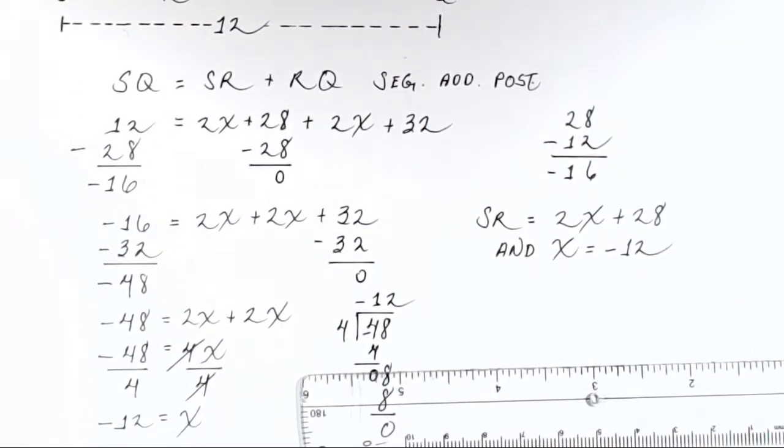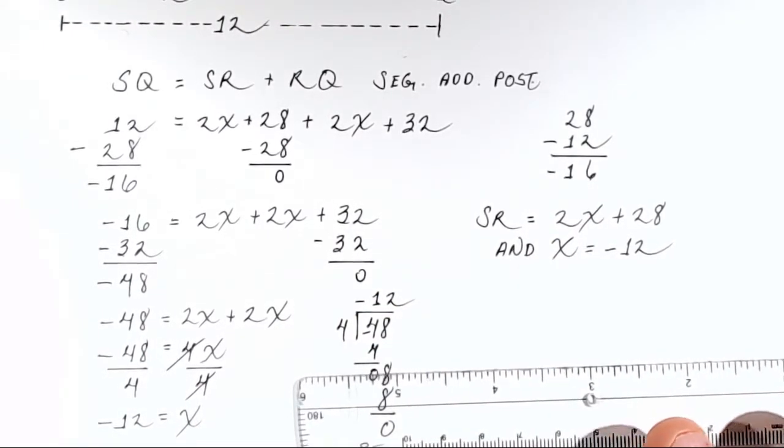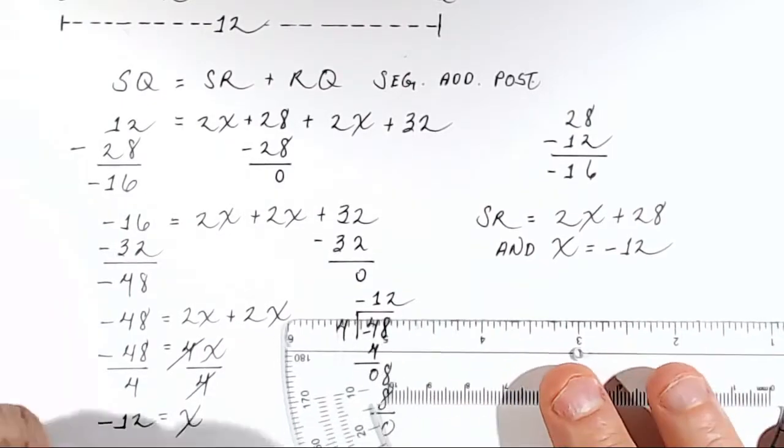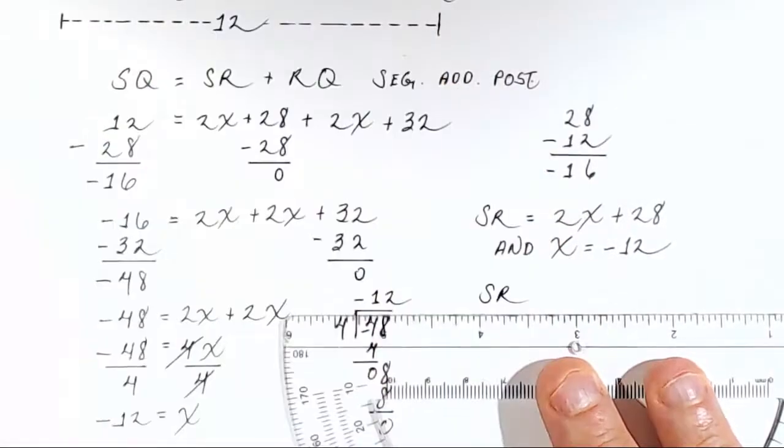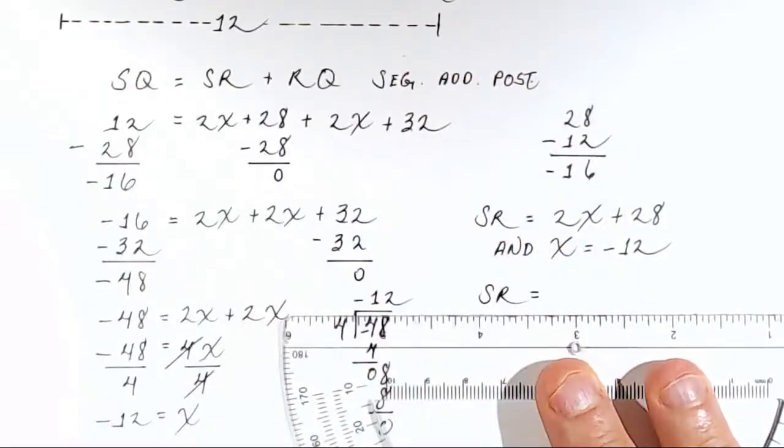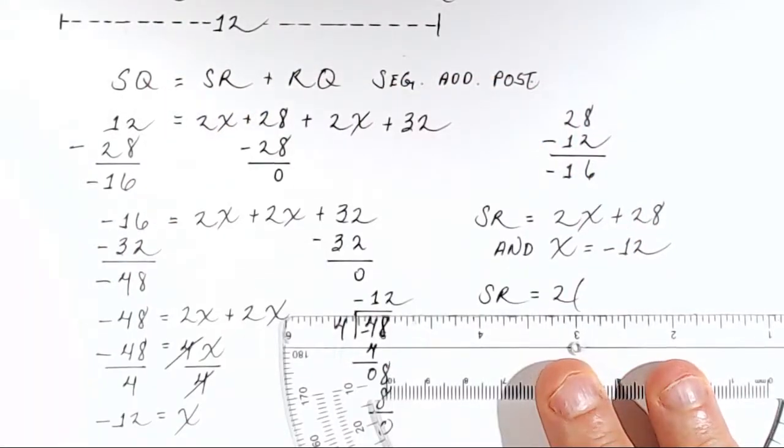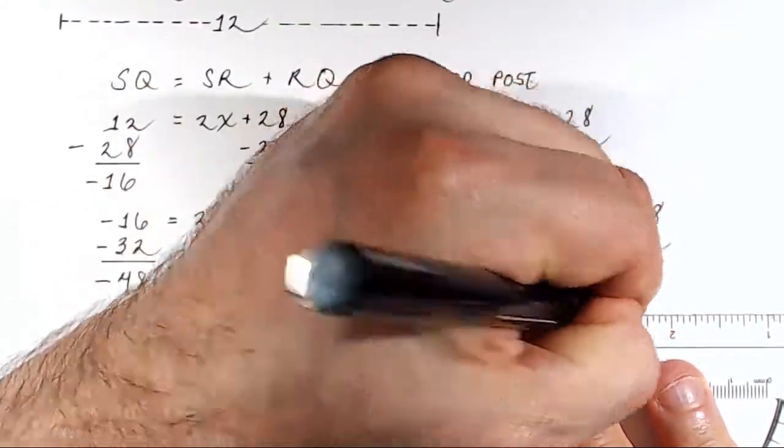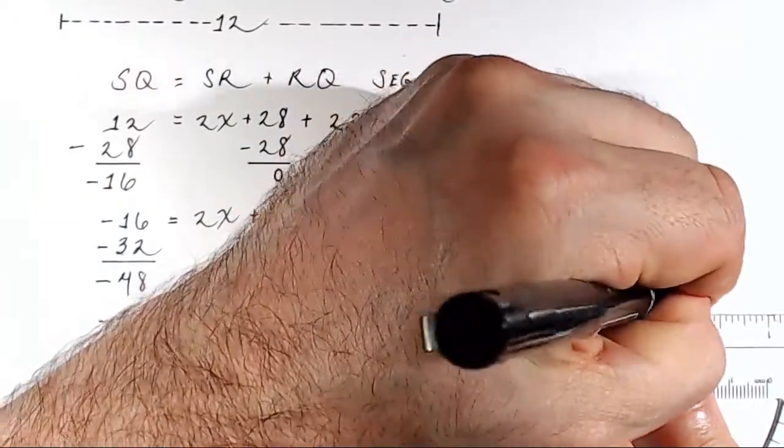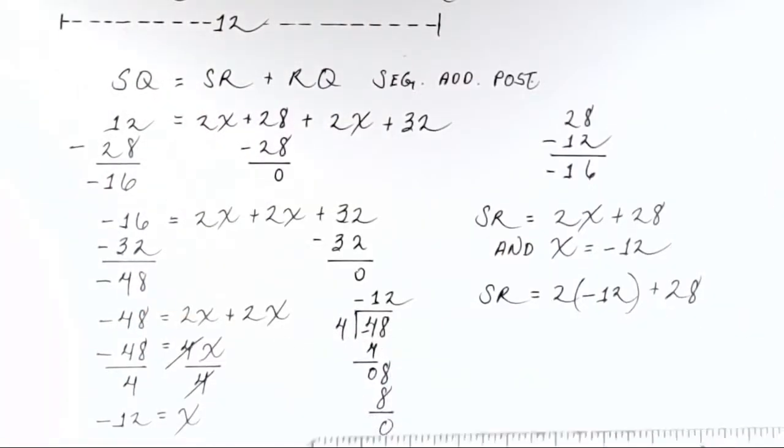So what we need to do is substitute negative 12 for x. All right, so we'll do that now. SR, we'll write SR equals 2, and then we'll put open parentheses, and then put that negative 12 in there where the x used to be. Negative 12, close parentheses, plus 28.